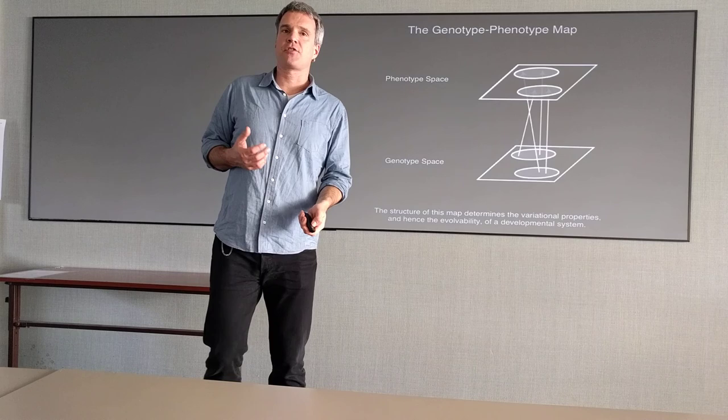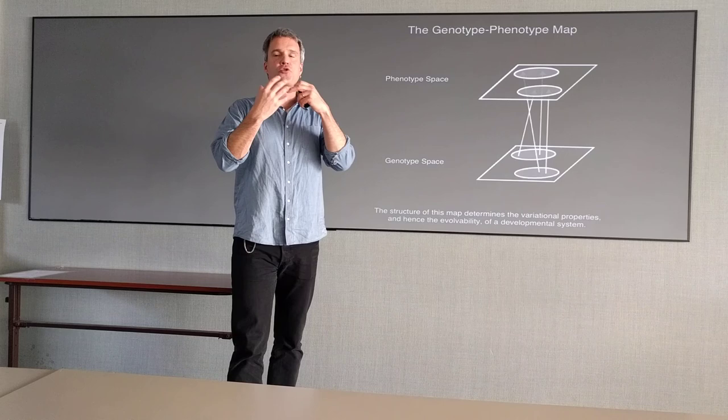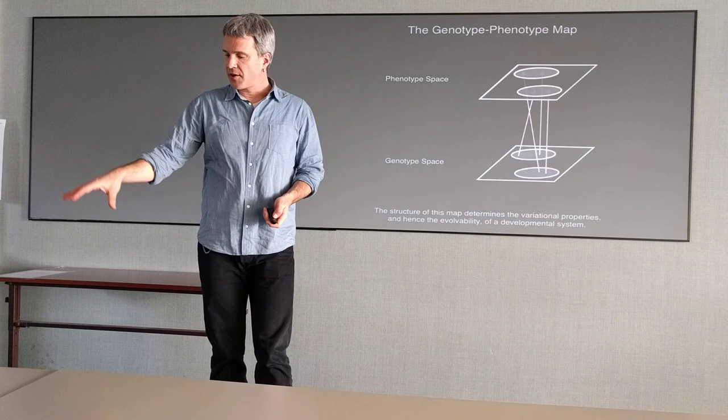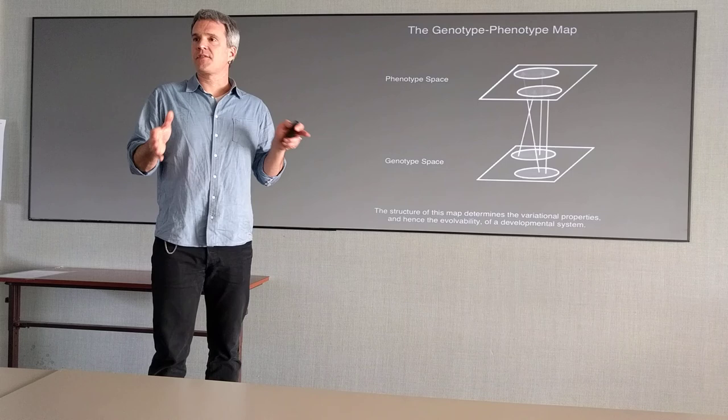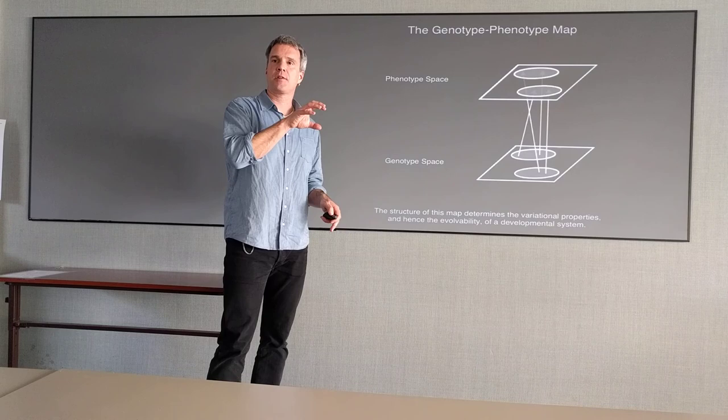We want to understand the developmental, physical, and any other constraints that exist here. And we want to understand how that influences the phenotypes that you can actually get and that selection can actually work on. So we're trying to understand the source of the variation that evolution works on.